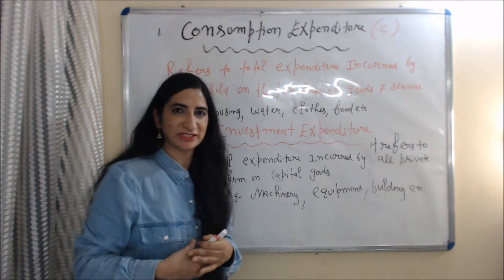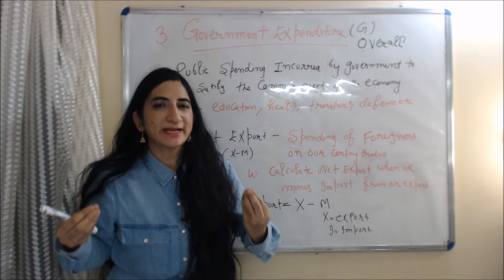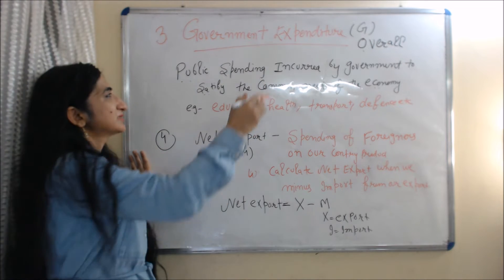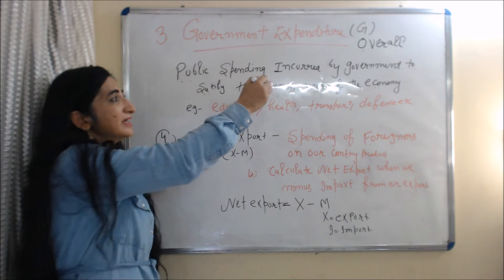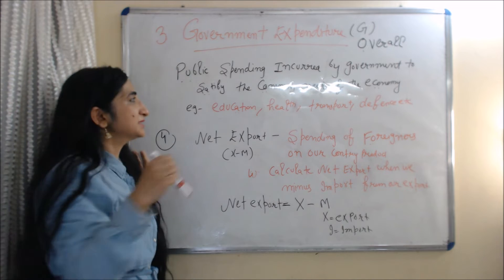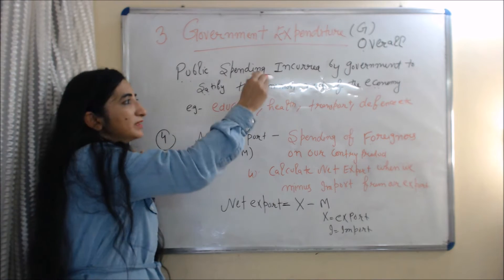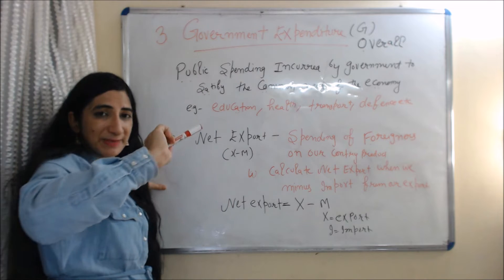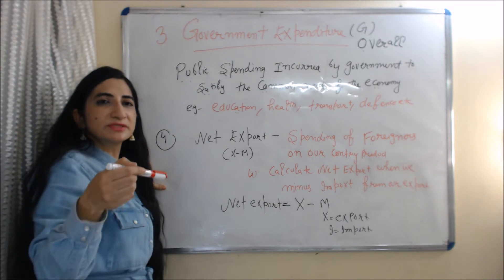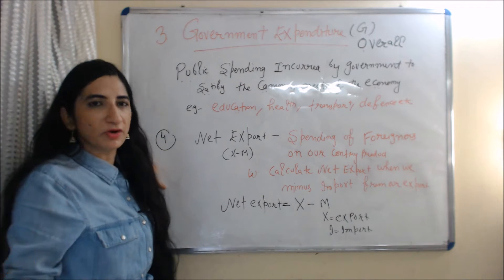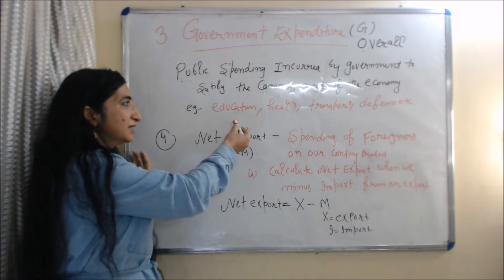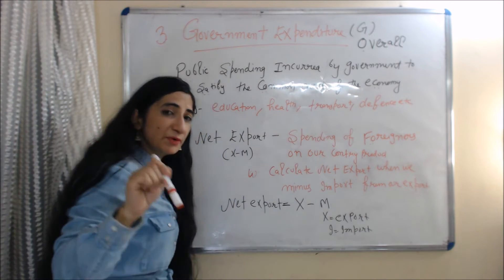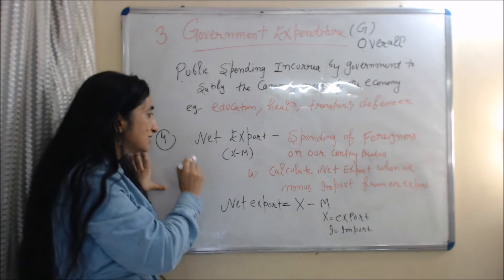For example, expenditure on machinery, equipment, and buildings are examples of investment expenditure. The next component is government expenditure, which is overall public spending incurred by government to satisfy the common needs of the economy. Examples include spending on education, health, transport, and defense.